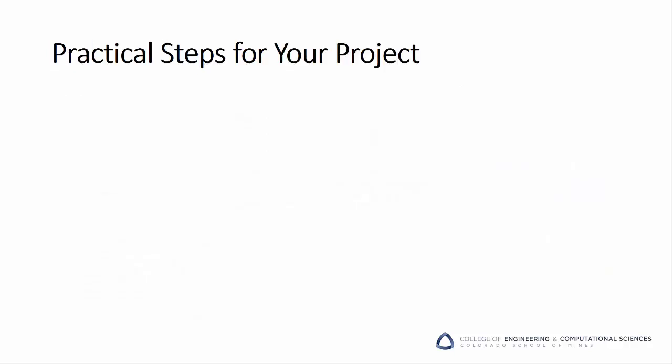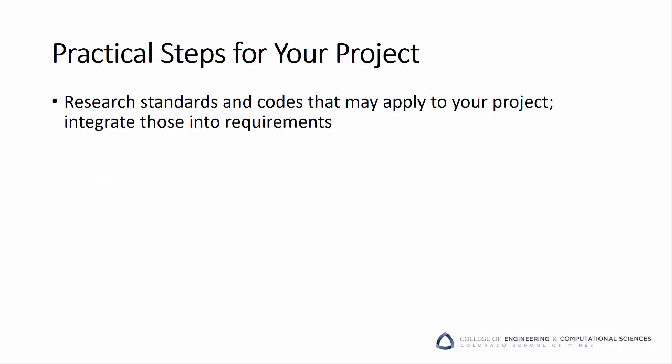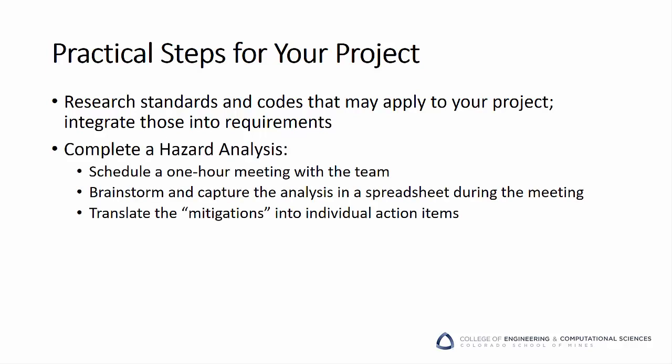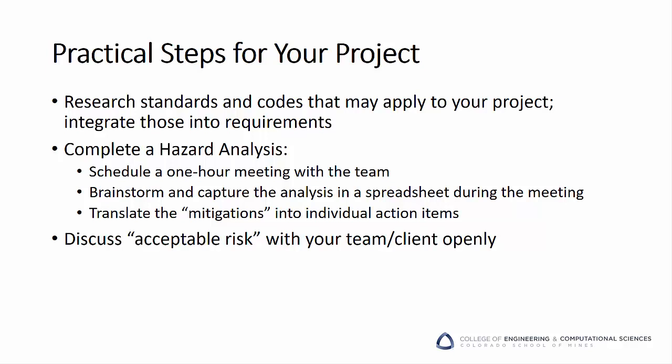And those are the basics of hazard analysis. So if your project has safety considerations, here are some practical steps you can take. First, research standards and codes that may apply to your project and integrate those into your requirements. Complete a hazard analysis — don't make this onerous. Schedule a one-hour meeting with the team, brainstorm and capture the analysis in a spreadsheet during the meeting, and then translate the mitigations into individual action items or requirements. Discuss acceptable risk openly with your team and client. It's important that as you make these decisions, you are getting feedback on your acceptable risk definition. And finally, if you have questions, ask — the faculty advisors and course faculty are ready to help you address safety at any point in your project.